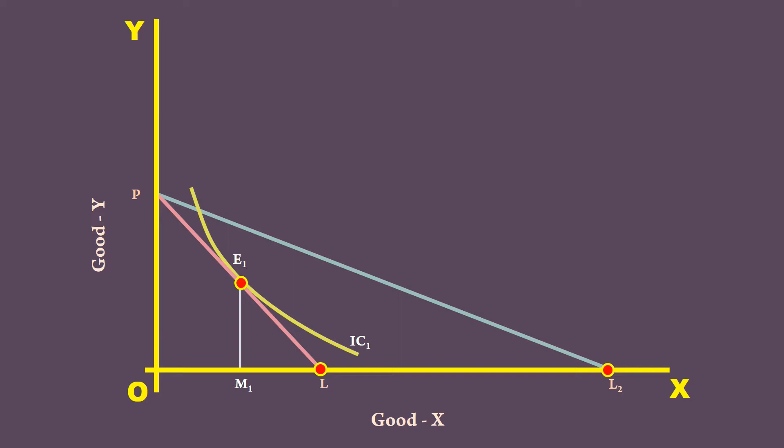That is, the purchasing power goes up. 5. A new equilibrium is formed at E3 where price line PL2 is tangent to IC2. The consumer moves along the price consumption curve and reaches point E3.